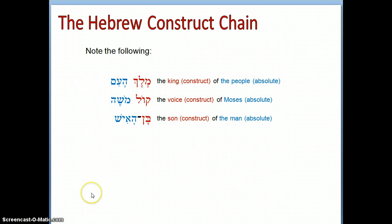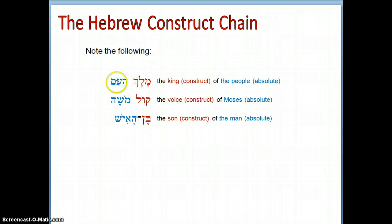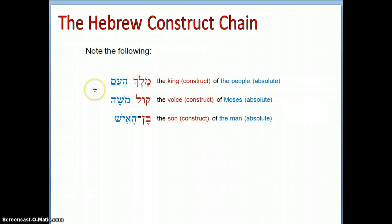Let's look at a few examples. 'Melech ha'am' — the king of the people. Notice that 'king' does not have the definite article, even though our translation does. As long as the absolute noun has the definite article, all nouns in the construct chain can be definite. Next: 'kol Mosheh' — the voice of Moses. Notice that 'voice' is definite because Moses, as the absolute noun, is a particular person — a proper noun is inherently definite, making 'the voice' definite too.